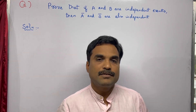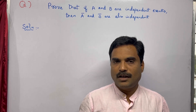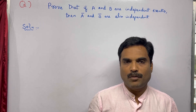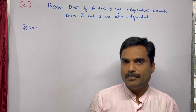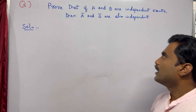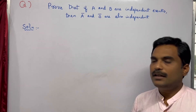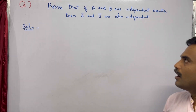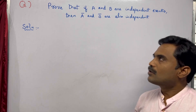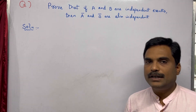Hi dear friends, welcome to my channel Yanan Takshisila. In this new video I am going to solve a mathematical problem under the topic probability. The problem is: prove that if A and B are independent events, then A-bar and B-bar are also independent.